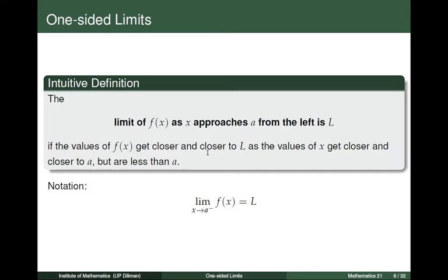We will now present the intuitive definition of one-sided limits. The limit of f(x) as x approaches a from the left is L if the values of f(x) get closer and closer to L as the values of x get closer and closer to a, but are less than a. In symbols, we write: the limit of f(x) as x tends to a minus equals L. We also read this as the limit of f(x) as x tends to a from the left side is equal to L.